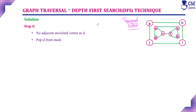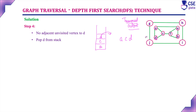Step 4: The stack contains A at the bottom, then C, then D. Currently visited vertex is D. The adjacent vertices A and C are already visited, so there is no adjacent unvisited vertex to D. Pop D from the stack. The popped order starts with D. Now in the stack only A and C remain.